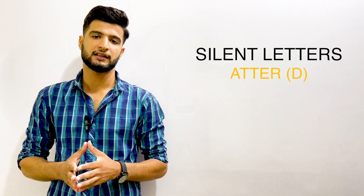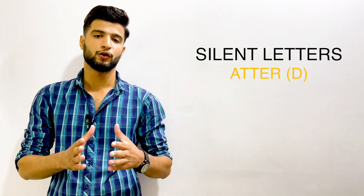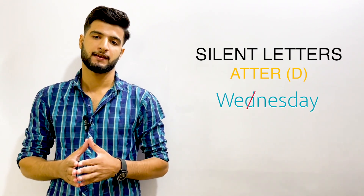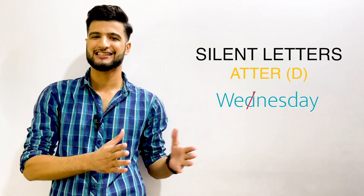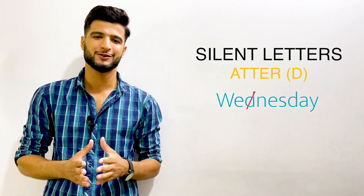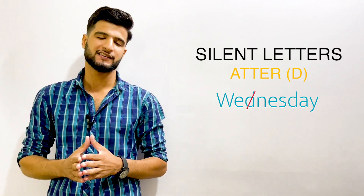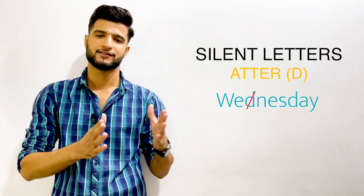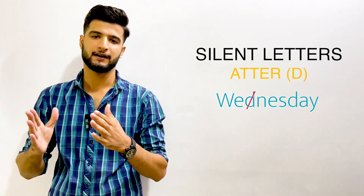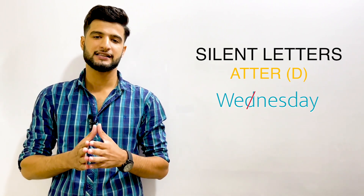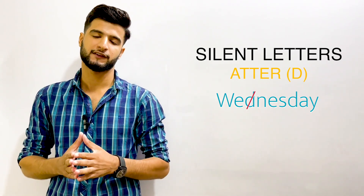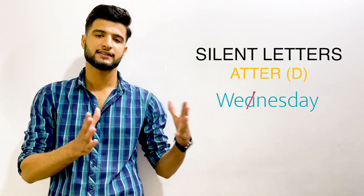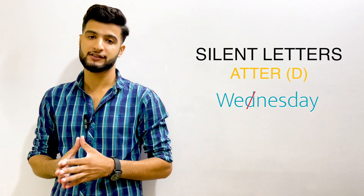Now, when is the letter D going to be silent? The letter D can be silent when it is before N or G. A great example is 'Wednesday' — most students pronounce it with three syllables as 'Wed-nes-day,' but because D is before N, it becomes silent and the word is pronounced with two syllables: 'Wens-day.'